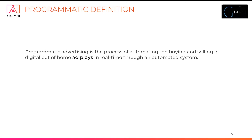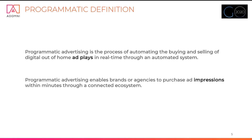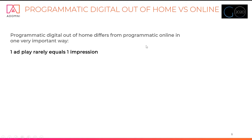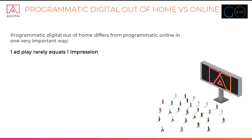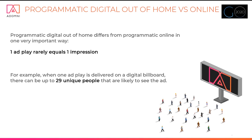Starting with the definition of programmatic: programmatic advertising is when you automatically buy and sell digital out-of-home ad plays in real time through an automated system. Brands or agencies purchase impressions on a CPM basis within minutes through a connected ecosystem. Programmatic digital out-of-home differs from online programmatic in one important way — one ad play rarely equals one impression. Take a digital billboard, for example: 29 different people may see that ad, creating what's called the impressions multiplier. So one ad play might equal 29 impressions.